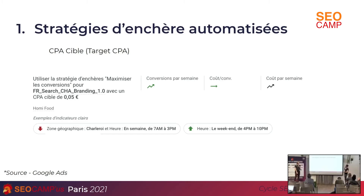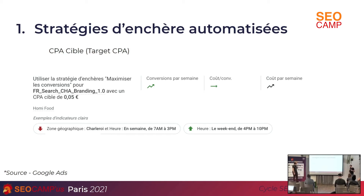Le premier, c'est la stratégie d'enchère automatisée. Ils en parlent tous. C'est le fameux CPA — ils ont fait vraiment la promotion de ce truc, ça vient de changer de nom, maintenant c'est « maximiser les conversions », CPA en paramètres. Le CPA, c'est qu'il vous propose d'utiliser l'algorithme pour améliorer vos campagnes. L'idée, c'est de dire que c'est devenu super compliqué, il y a plein de critères, donc avec le CPA, vous n'avez plus besoin de jouer avec ces critères.